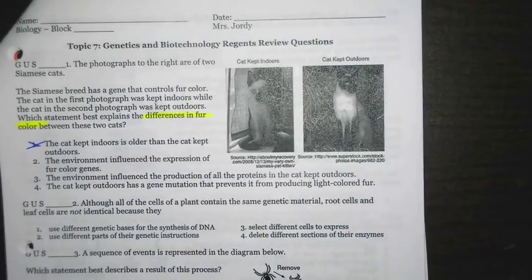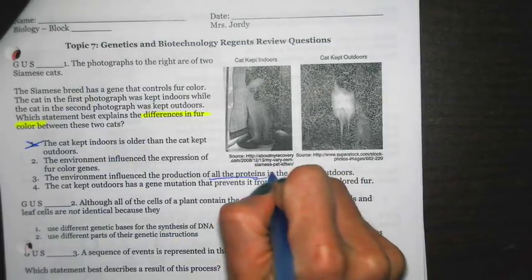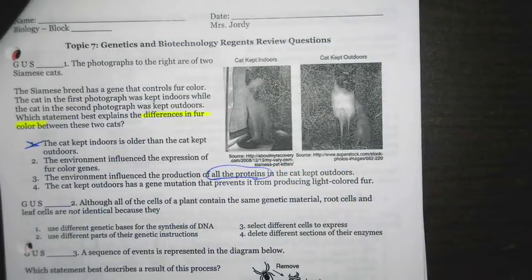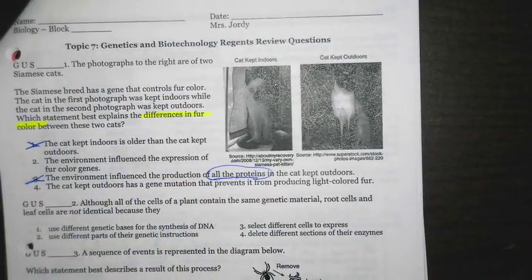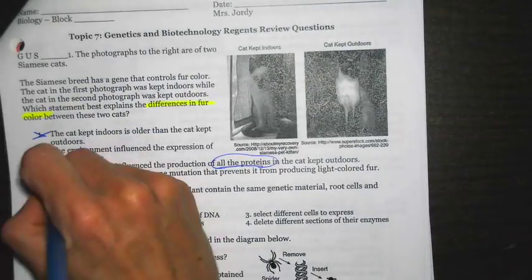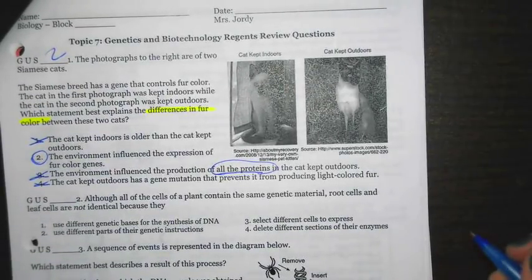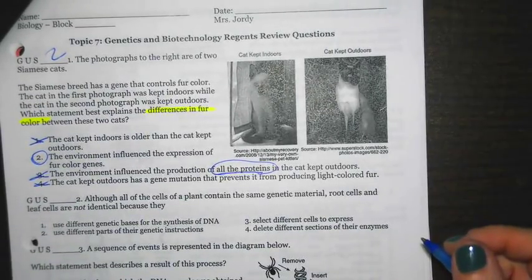Number 3 says the environment influences the production of all proteins that the cat kept outdoors. No, that's not correct, and again, sometimes it's just a little fine-tuning of the wording. It says all the proteins, so that's not going to be correct. And the cat kept outdoors has a gene mutation that prevents it from producing light-colored fur. Well, if I look at the outdoor cat, I actually see that it has quite a bit of light-colored fur, so that's not correct. The correct answer choice there is going to be 2. That's talking about gene expression and how genes are turned on or off or activated.